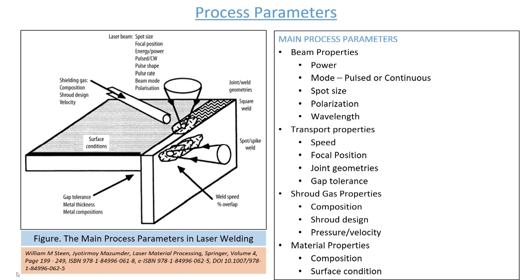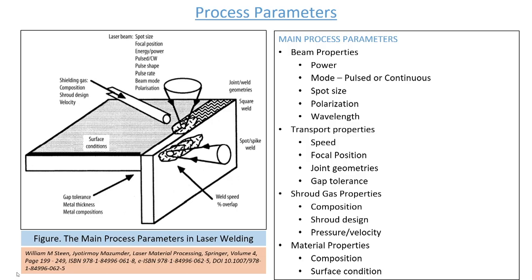Now let us look comprehensively at the various parameters affecting the laser welding process. There are several groups of process parameters. The first group is beam properties, including laser power, the mode of the laser (pulsed or continuous wave), and the spot size or spot diameter. If spot size decreases with constant laser power, the heat power density increases.